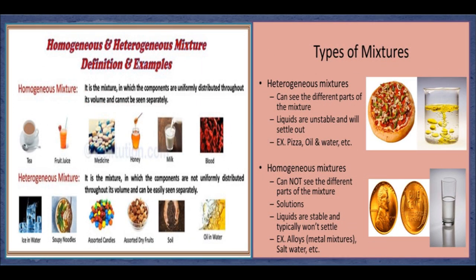Types of Mixtures. On the basis of distribution of components, mixtures can be classified into two types: homogeneous mixture and heterogeneous mixture. In a homogeneous mixture, such as salt dissolved in water, we cannot see the particles of salt with our naked eye. The mixture looks the same throughout, and every sip of salty water tastes just the same, because there is a uniform distribution of particles throughout. Other examples include sugar dissolved in water, juice, tea and air.